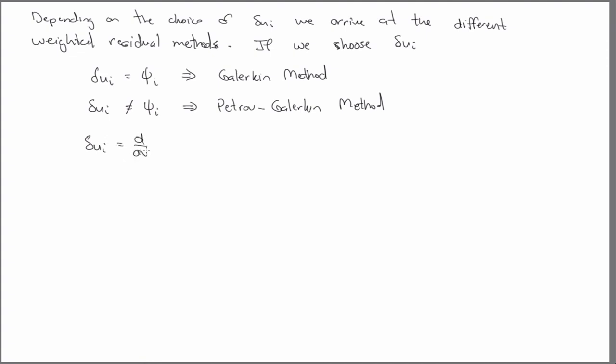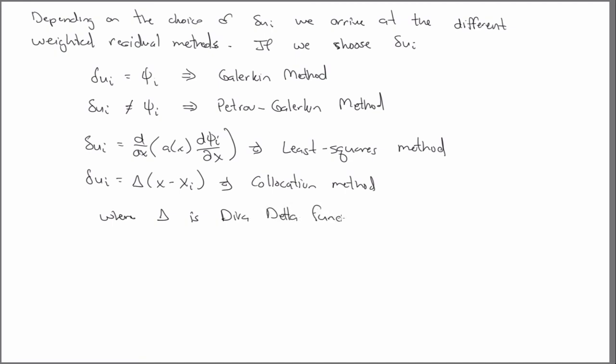If you choose it to be ∂R/∂C_i ∂phi_i/∂x, we get a least squares method. And if you choose it to be delta of x minus x_i, you get a collocation method. That's where this guy is the Dirac delta function. So that is equal to zero when x is not equal to x_i, and it's equal to one when x is equal to x_i.